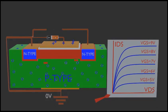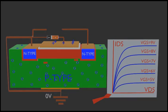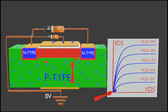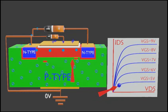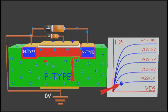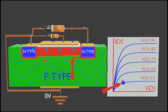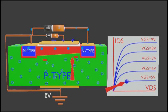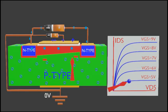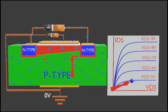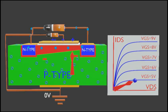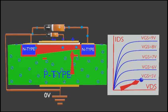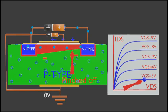Now let's fix the gate voltage. With a channel present, we apply voltage between drain and source and observe the relation between VDS and IDS. The channel is made up of electrons and the drain has positive voltage. When we increase the voltage at drain, some electrons jump from the channel to the drain, so the channel width shrinks near the drain. In the beginning, increasing VDS causes drain current IDS to increase linearly.